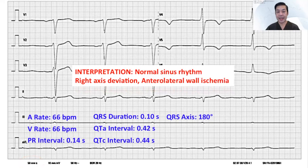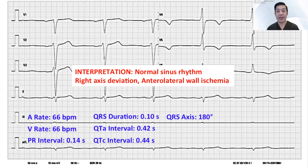So that will make our rate 66 beats per minute, both in the atria and the ventricles. The PR interval is now normal at 0.14 seconds. The QRS duration is 0.10. The QTa is 0.42, corrected at 0.44, still with the axis at 180 degrees. So with that realization, we now change our interpretation to normal sinus rhythm, right axis deviation, and anterolateral wall ischemia.